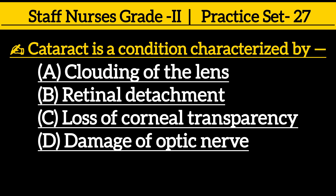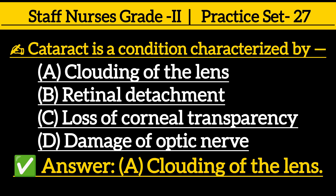Next one: cataract is a condition characterized by — option A: Clouding of the lens, option B: Retinal detachment, option C: Loss of corneal transparency, option D: Damage of optic nerve. Correct answer is option A: Clouding of the lens.